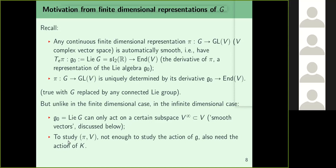Let me recall the definition of differentiation. Given a continuous representation (pi, V), a vector v in V is called differentiable if the limit — as t → 0 — of (pi(exp(tX))v − v)/t exists for X in the Lie algebra. This is the directional derivative in the direction of X. This definition applies to X in sl2(R); one can extend to sl2(C) by writing X = X1 + iX2 and declaring pi(X)v = pi(X1)v + i·pi(X2)v.